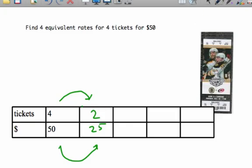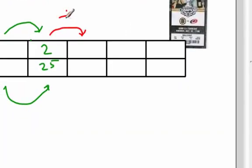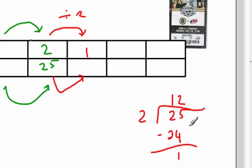I could also divide that two by two as well. Divide two by two and divide twenty-five by two. We get one ticket, and twenty-five divided by two — ten times two is twenty, so it's a bit more than ten. Two goes into twenty-five twelve times with one left over, and any time you divide an odd number by two you get point five. So for every one ticket it's twelve and a half dollars — twelve dollars and fifty cents. That's a second equivalent rate.